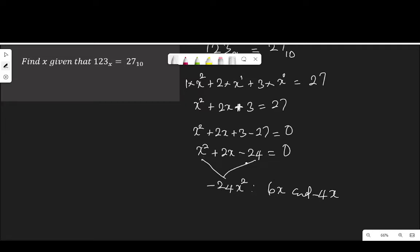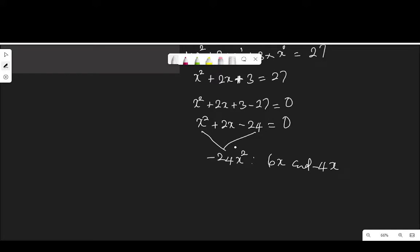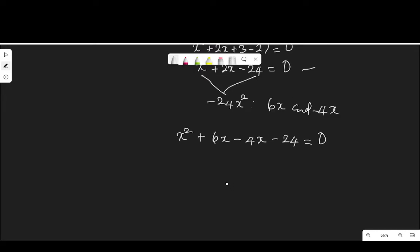6x multiplied by negative 4x is negative 24x squared. So the factors required, in this case, are 6x and negative 4x. The moment we get the factors, we can replace the middle term with the factors so that this equation becomes, instead of x squared plus 2x, now we substitute the 2x with these factors. So it will be x squared plus 6x minus 4x minus 24, equal to 0. That is my approach of solving quadratic equations.